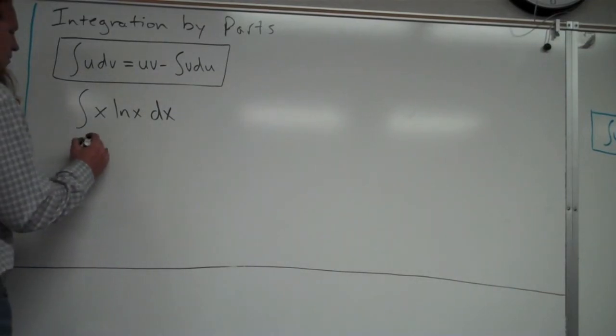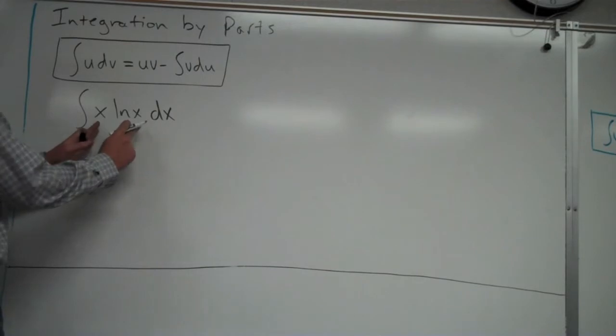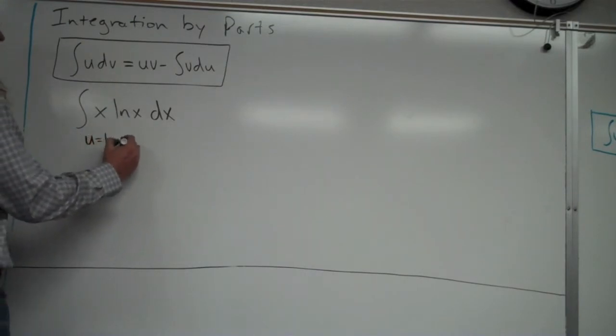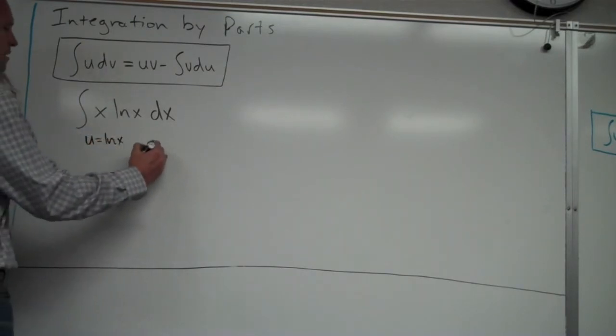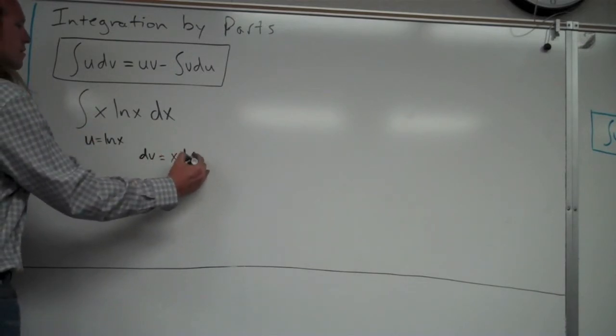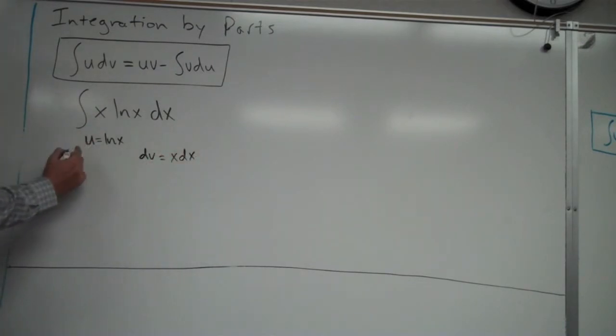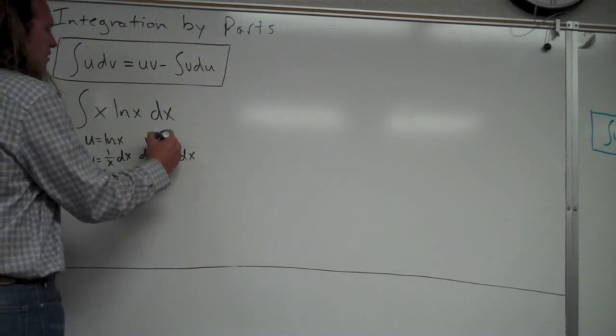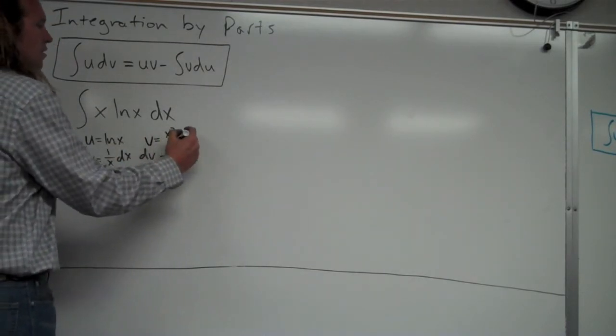So we're going to actually let, whenever you get a problem like this, that no other techniques will work, ln x is going to be your u. So u is equal to ln x. And then dv is equal to the rest of it, which would be our x dx. So I take the derivative of u to find du, so the derivative of ln x is 1 over x dx. I do the anti-derivative of dv to get v. And the anti-derivative of that is going to be x squared over 2.